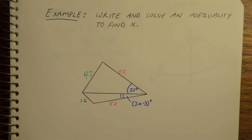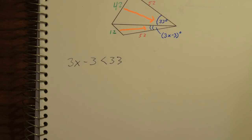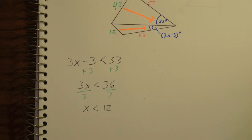Another example: write and solve an inequality to find X. We're given two side lengths of 52, a shared side, and the green sides 42 and 12. We have information on three pairs of sides and want to solve for angles using the SSS Inequality. Since 42 is bigger than 12, the angle opposite 42 must be larger, so 33 must be bigger than 3x − 3. Solving, x must be less than 12.